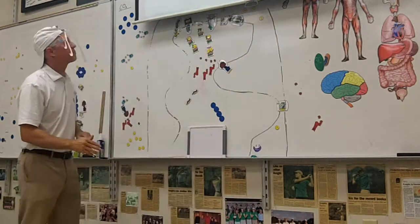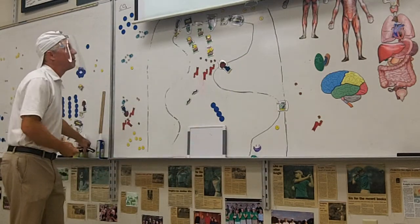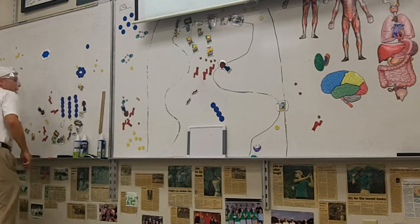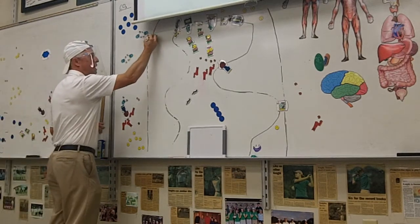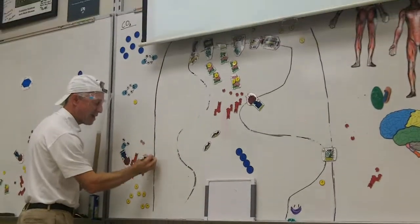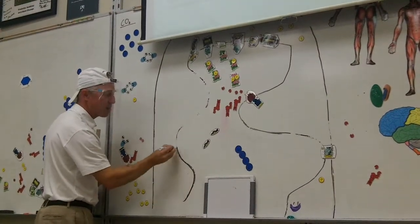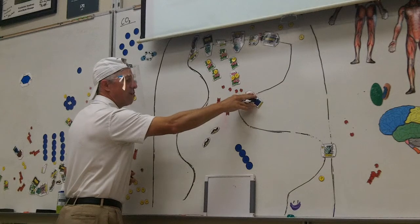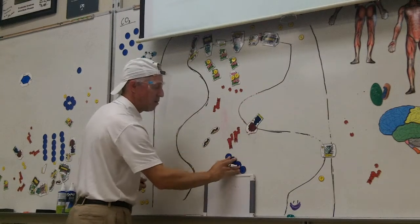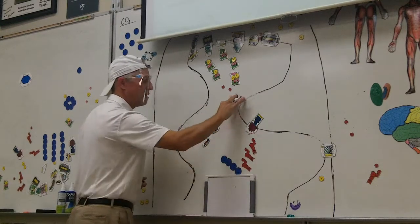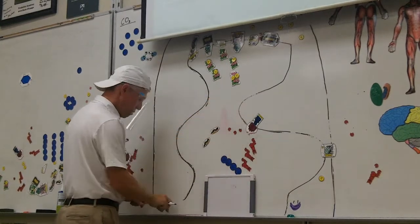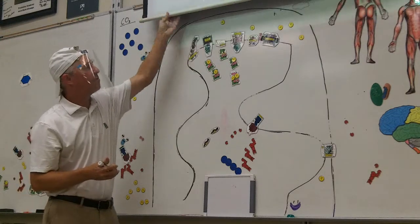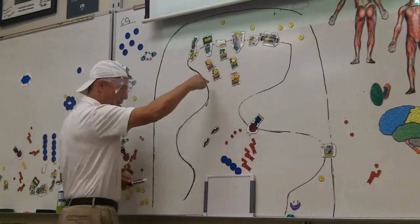We have a bunch of NADHs and FADHs formed from the citric acid cycle and glycolysis and the prep reaction. We have a bunch of these electron carriers here. What are we going to do with these electron carriers?